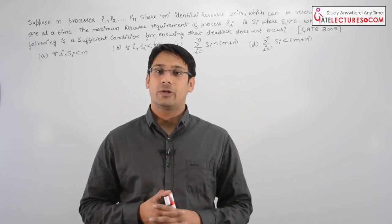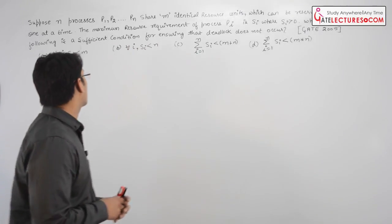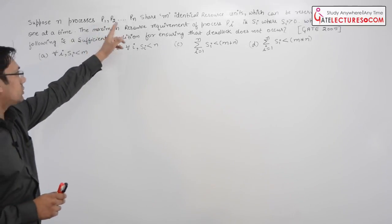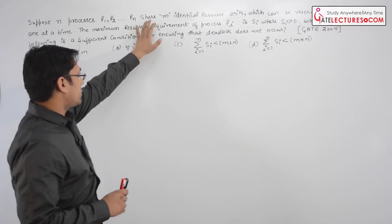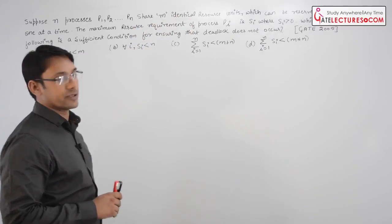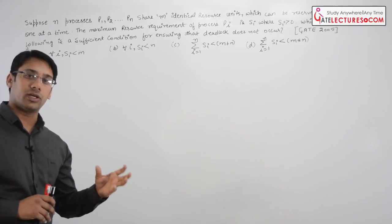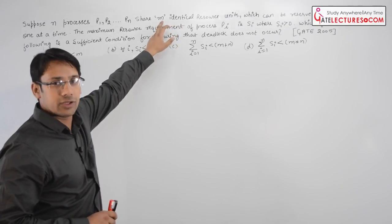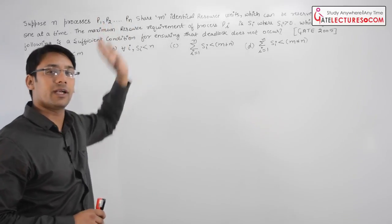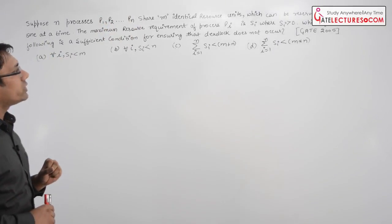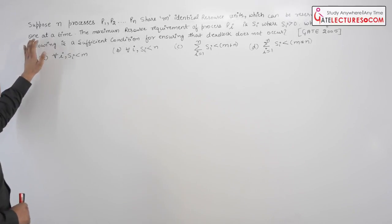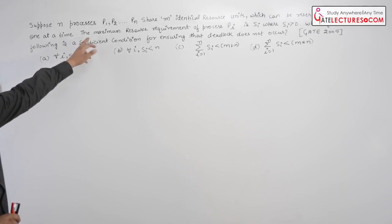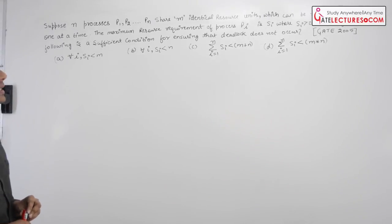Let us look at this question from GATE 2005. Suppose there are n processes, P1 through Pn, sharing m identical resource units. This resource has m identical units, and every process is sharing m identical units of the same resource. These resources can be reserved and released one at a time, and the maximum resource requirement for process Pi is Si.